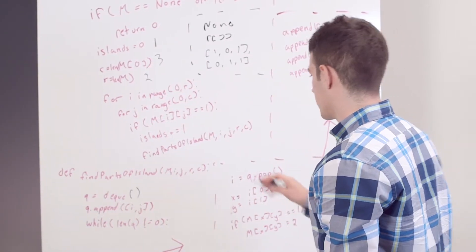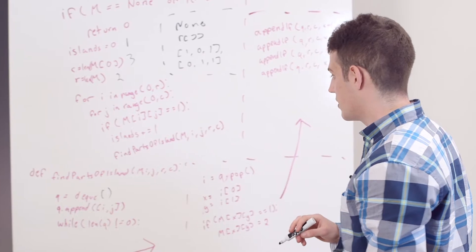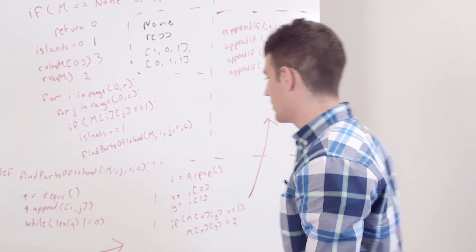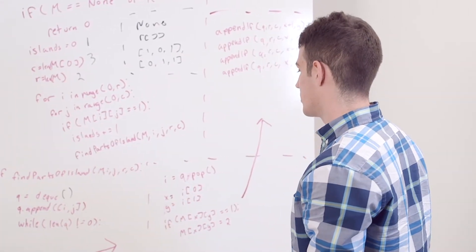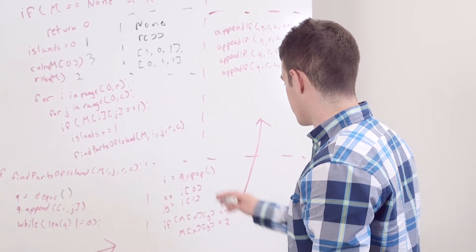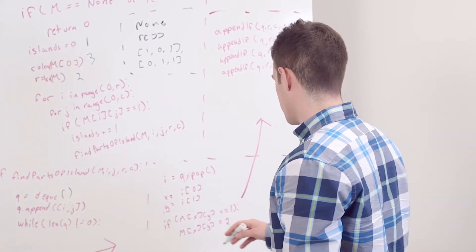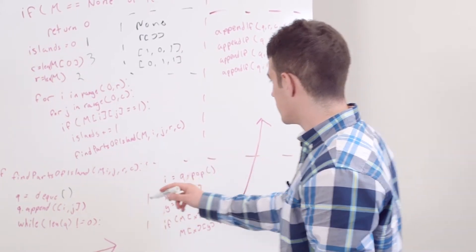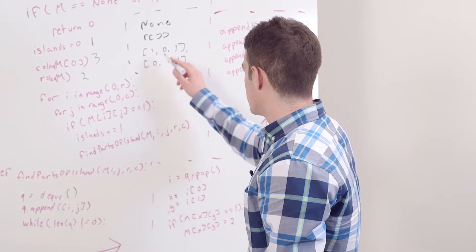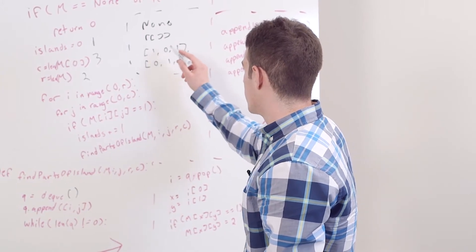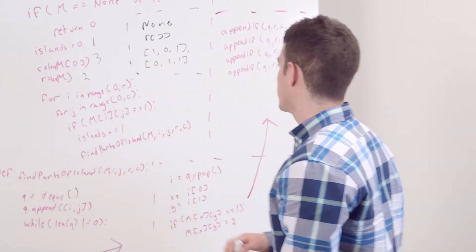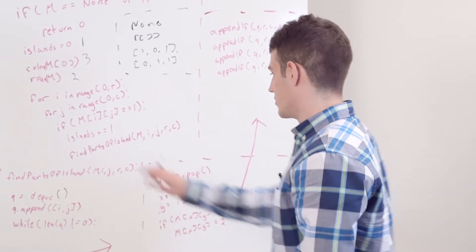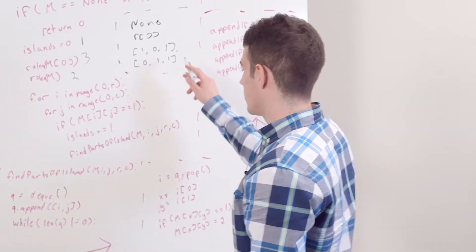I go to my findPartsOfIsland method here, creating my queue, appending those values, and then I have my breadth-first search here that I'm going through. For this instance, there's no one to the right or on the bottom of it, so I wouldn't have to do this. And then I go to the next one.